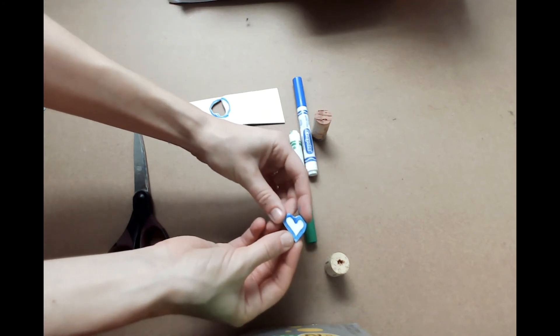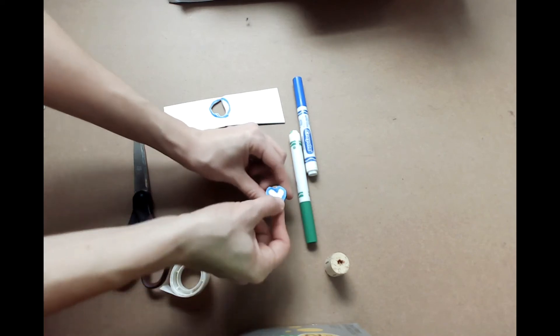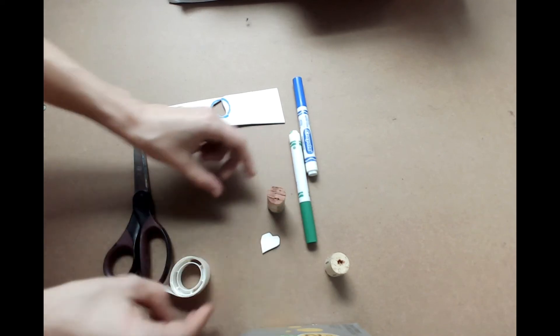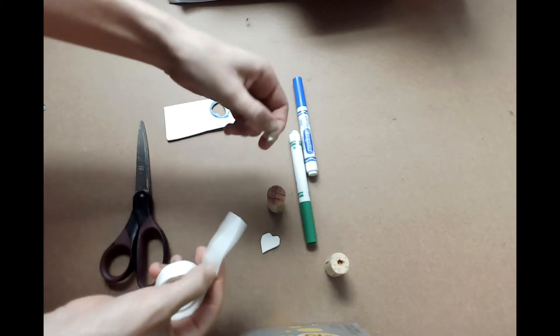Great, now we have our stamp shape. Now we will take our shape and use a glue dot to attach it to the top of the cork. The glue dots can be a little tricky, so you can always ask a grown-up for help.